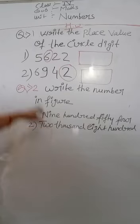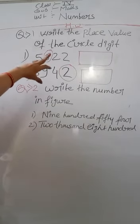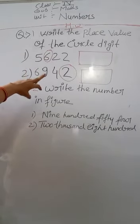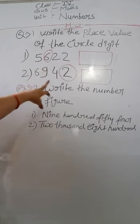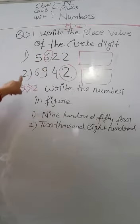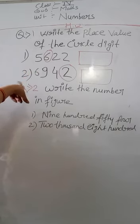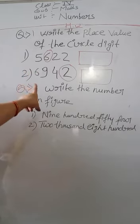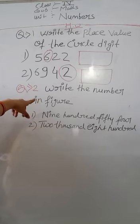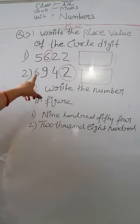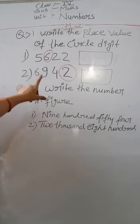Here is your homework. First: write the place value of the circled digit. There are two circled digits. First number is 5622 and you have to find the place value of the circled 2. Second number is 6942 and you have to find the place value of 6 and 2.